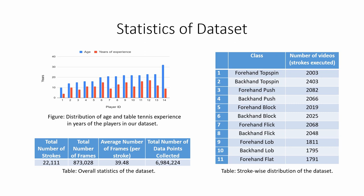We have collected a diverse dataset containing 11 different strokes executed by 14 professional players. The players were picked in a manner such that there exists a variety in age, height, dominant hand and years of experience playing table tennis. The variation in the age and years of experience is as depicted in the bar graph. This was adopted to improve the generalization capabilities of the model. The total number of strokes amounts to 22,111 with an average of 39.48 frames per stroke. The stroke-wise distribution of the dataset is as depicted in the table on the right.